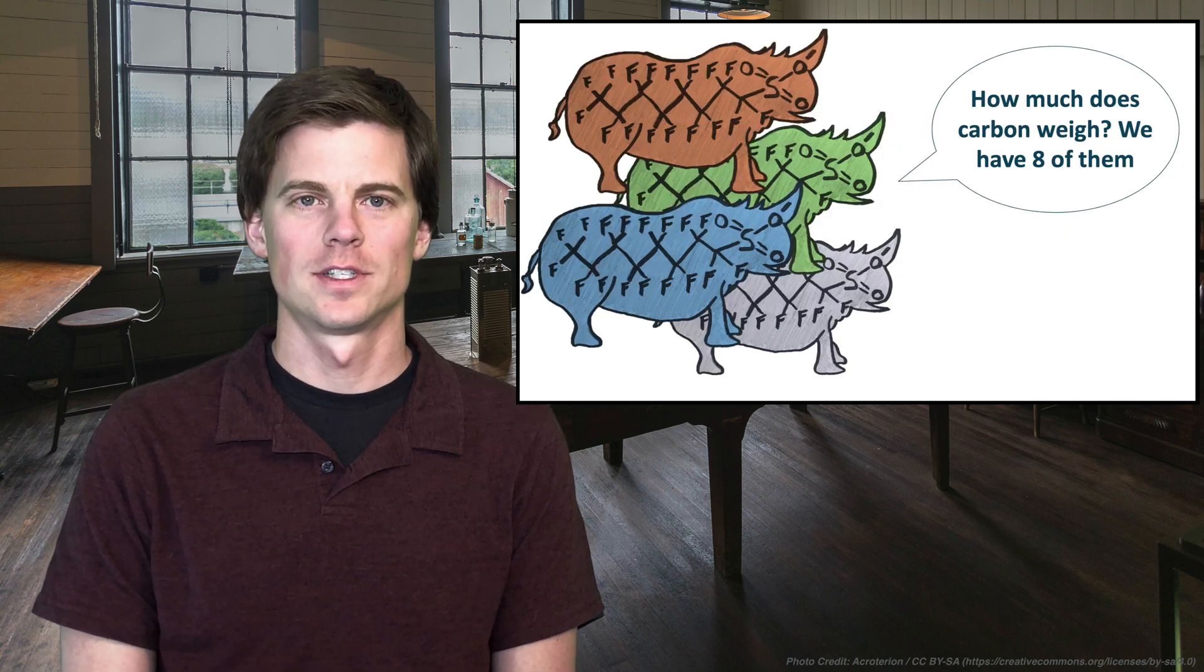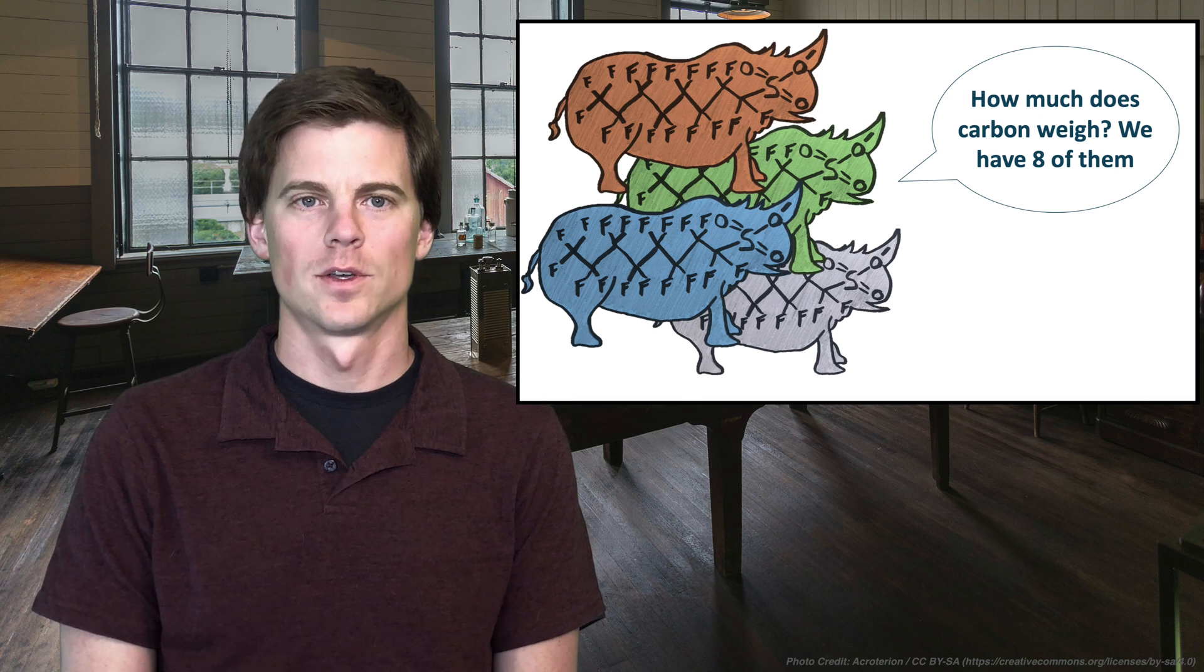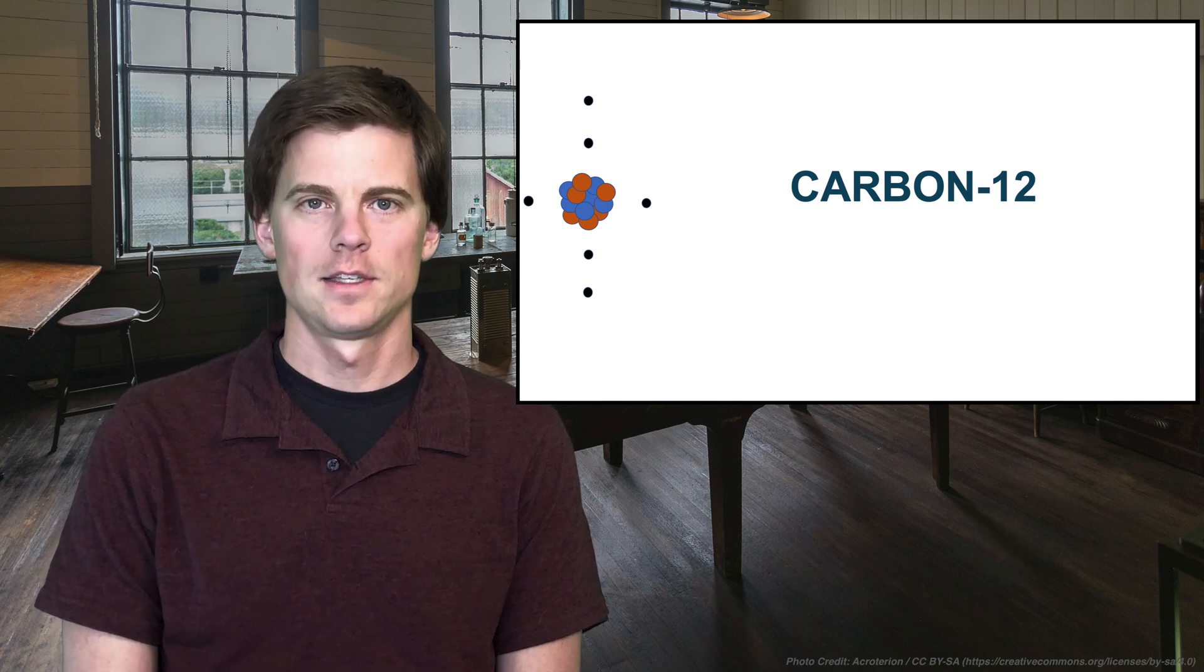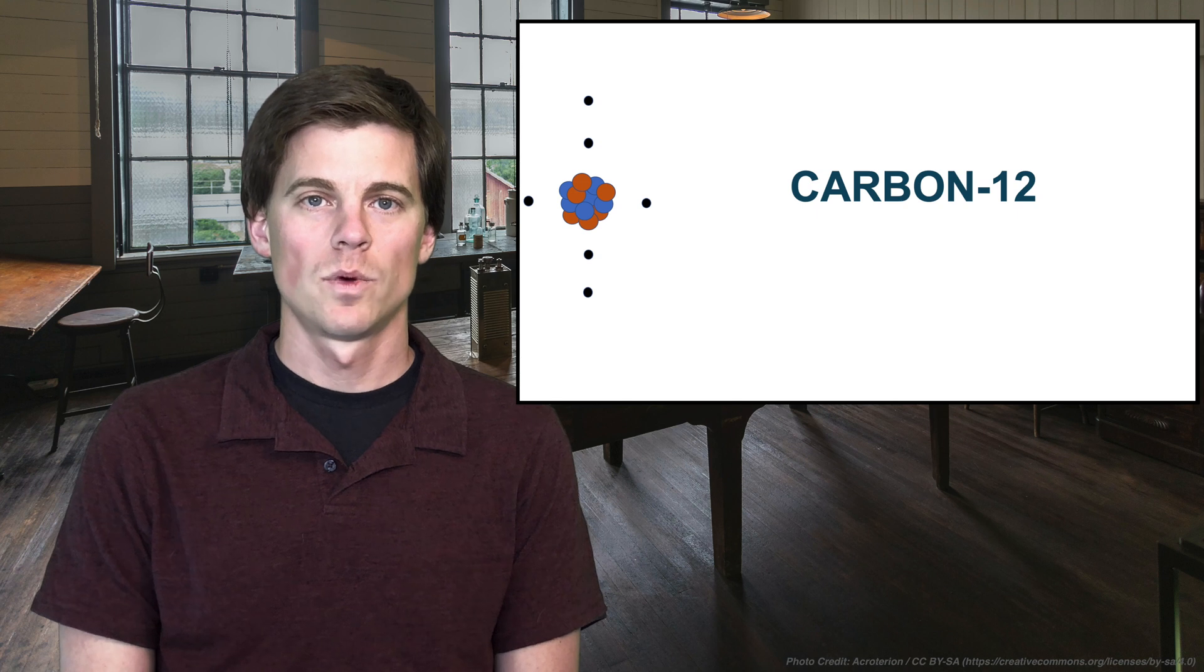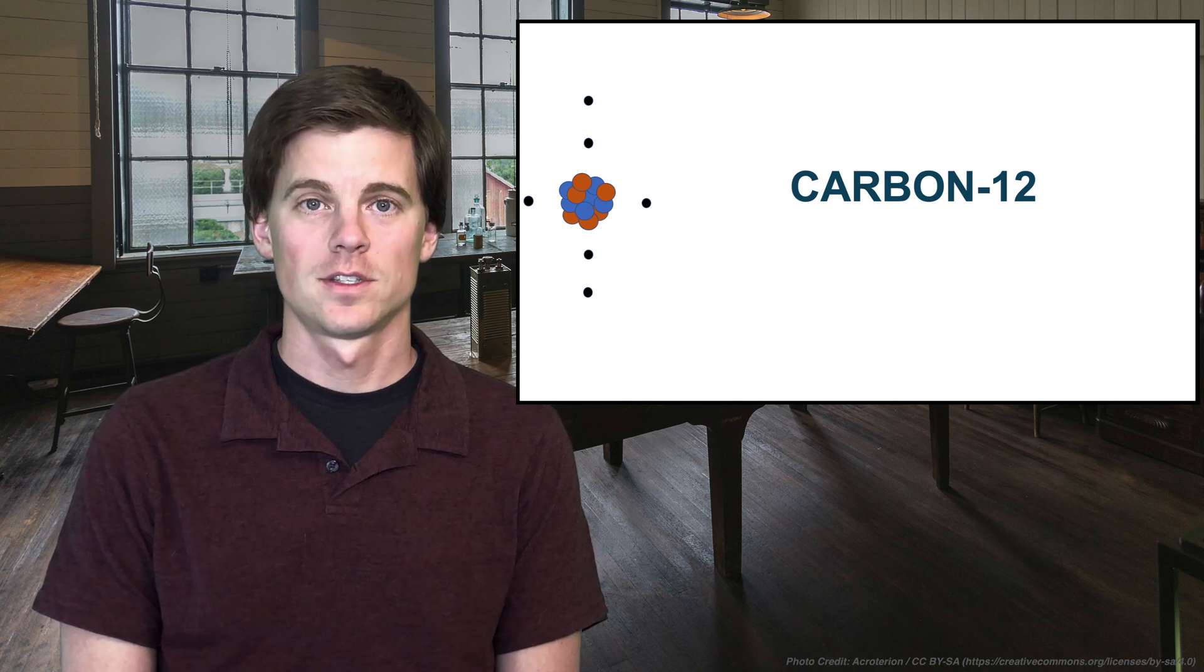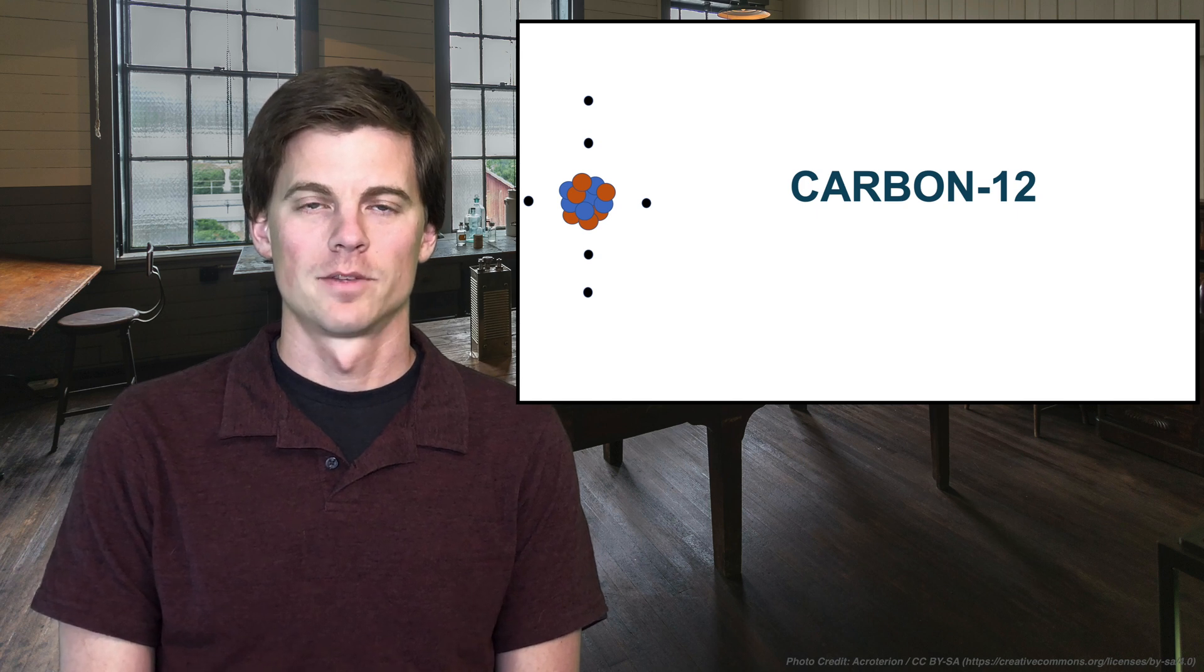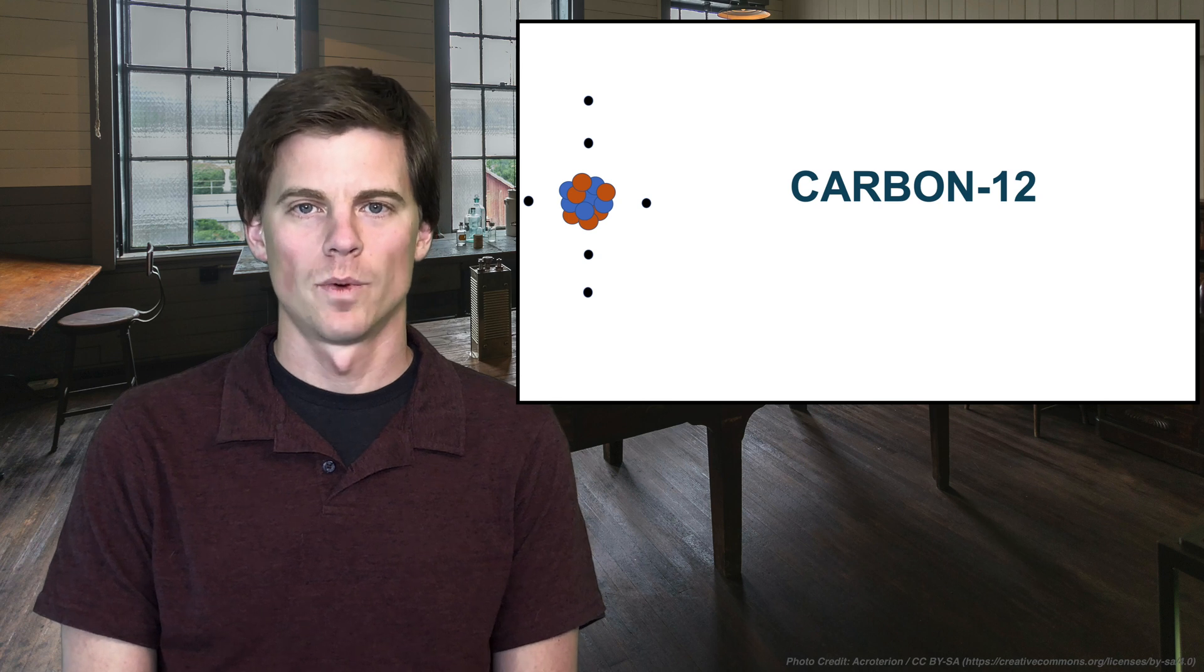So we're going to start out just with our PFAS asking, well, they all have eight carbon. They're PFAS. So how much does carbon weigh? And you may know this, but you may not have gone through this little exercise. So carbon-12. What this means is carbon-12 has six neutrons, six protons, and six electrons. And maybe carbon-13 would have seven neutrons, but we'll stick with carbon-12, right?